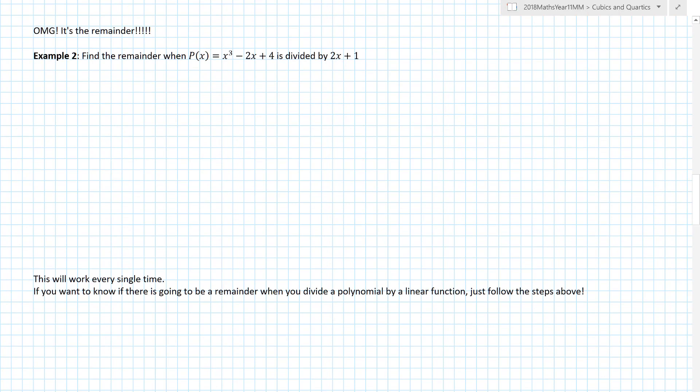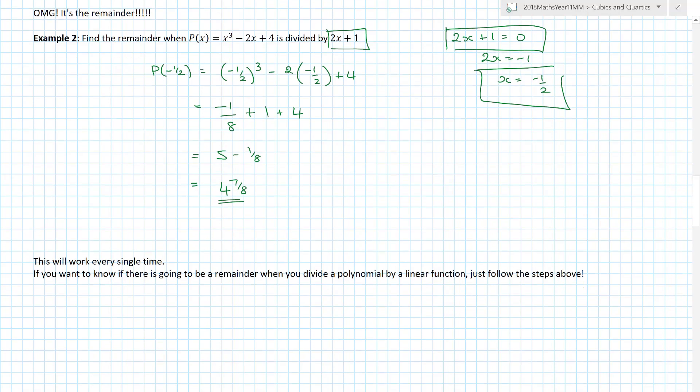What about this situation here? Does it work with 2x plus 1? Yes. Just always do 2x plus 1 equals 0. So 2x equals negative 1, so x equals negative 1 half. I'm going to try and find the remainder when I put x equals minus 1 half into this bracket. So p of minus 1 half equals minus 1 half cubed minus 2 lots of minus 1 half plus 4. Minus 1 half cubed is minus 1 over 8. Minus 2 times minus 1 half gives me plus 1 plus the 4. So I have 5 minus 1 over 8, which gives me 4 and 7 eighths. The question I need to ask is, is 2x plus 1 a factor? No. Why is it not a factor? Because I've got a remainder.